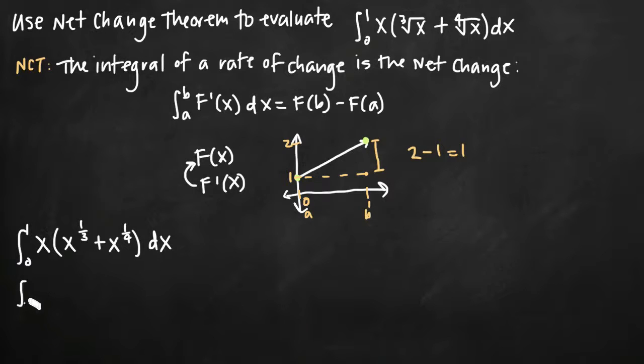Now we'll distribute that x and we'll get x to the first times x to the 1 third. You add the exponents together. 1 plus 1 third is 4 thirds, so we'll get x to the 4 thirds. Then x to the 1 times x to the 1 fourth, 1 plus 1 fourth is 5 fourths, so x to the 5 fourths dx.